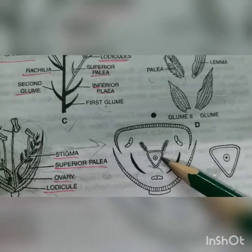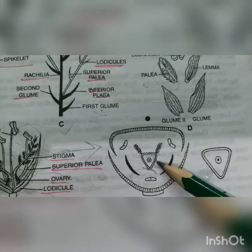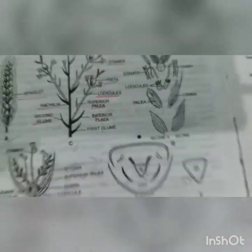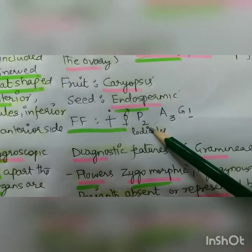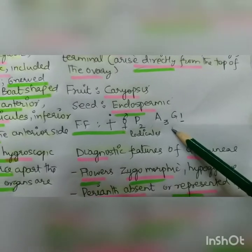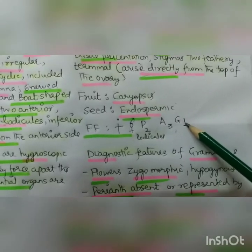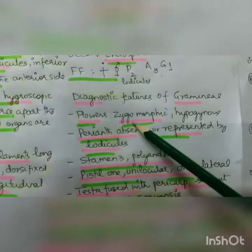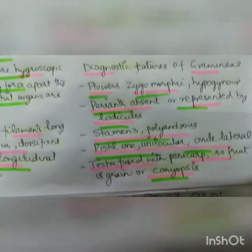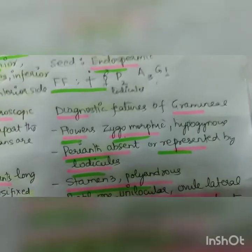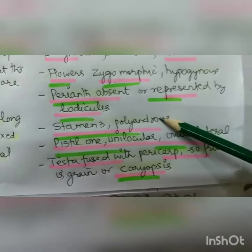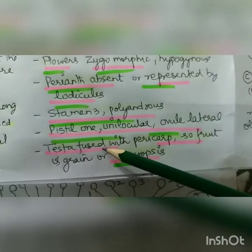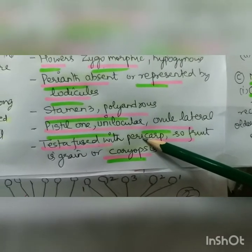The fruit is a caryopsis, which we covered yesterday, and the seed is endospermic. The floral formula shows it is zygomorphic, bisexual, with two lodicules, androecium of three, and gynoecium of one. Diagnostic features of Gramineae: zygomorphic, hypogynous condition so the ovary is superior and rest of the perianth parts are inferior. Perianth is represented by lodicules, stamen three, polyandrous, pistil unilocular, and testa fused with pericarp. The fruit is grain or caryopsis.